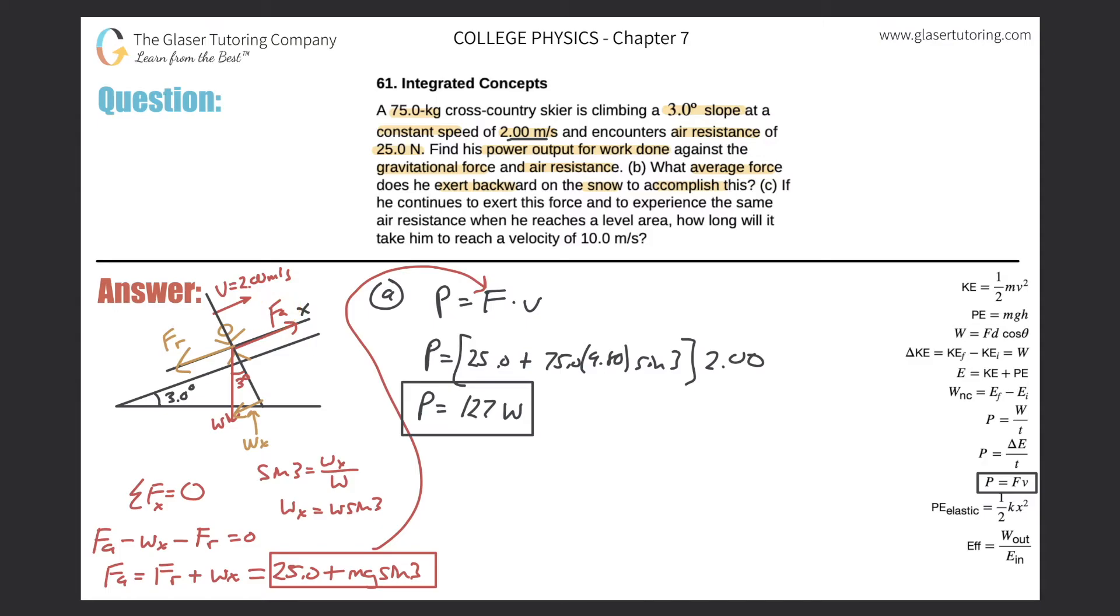Okay, so the force this skier applies backward on the snow is equal but opposite to the force that the snow applies to him. And that's the force that's propelling him forward. Okay, so basically, to answer letter B, it's simply just find what F sub A is.